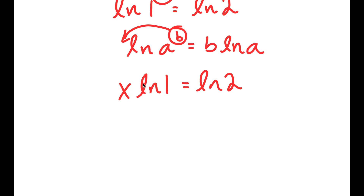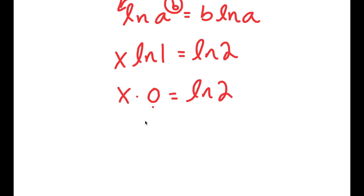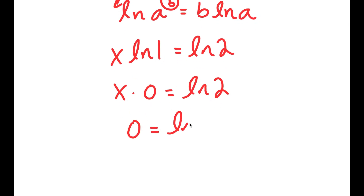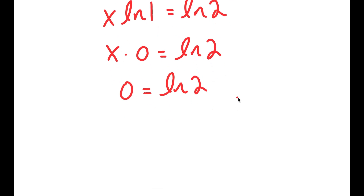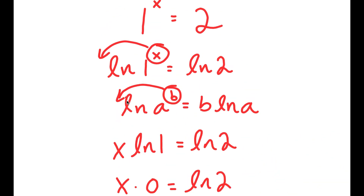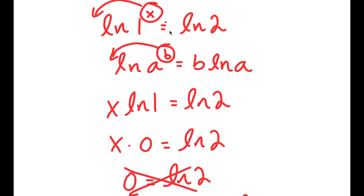Now, ln of 1 is equal to 0. So I get x times 0 is equal to ln 2, meaning 0 is equal to ln 2. However, ln 2 is equal to 0.693, so this is false. This means the usual method of solving exponential equations does not work here.